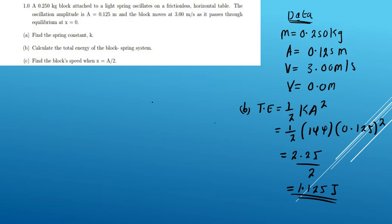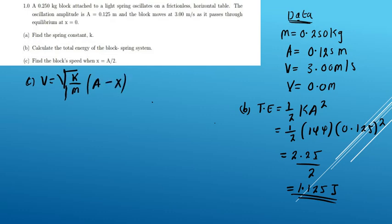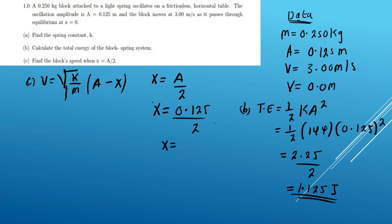For part C, which is very simple, we use the velocity formula: v equals the square root of k over m, multiplied by the square root of a squared minus x squared. In this case we're given that x equals a divided by 2. Since the oscillation amplitude is 0.125 meters, our x equals 0.125 divided by 2, which gives 0.0625 meters.